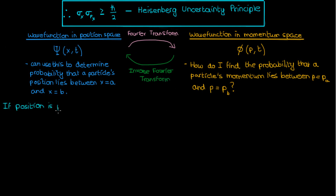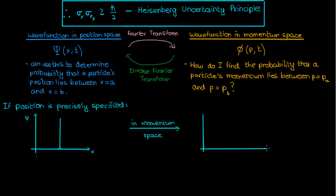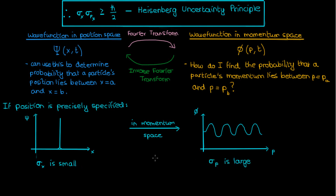If my position is precisely specified, my wave function in position space will look very close to a delta function — it'll look like a spike. But when I look at the wave function in momentum space, it looks like a wave, because the Fourier transform of a delta function gives a sinusoidal wave. As a result, I won't be able to precisely specify the momentum, because in momentum space the wave function is this oscillatory wave and it's impossible to pinpoint an exact value of momentum since the wave function, which is related to the probability density function, is so spread out. So the variation or uncertainty in x is small, but because of the nature of Fourier transforms, the uncertainty in momentum must be large.